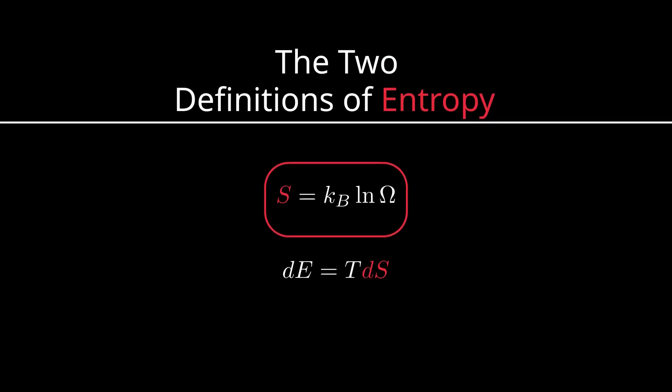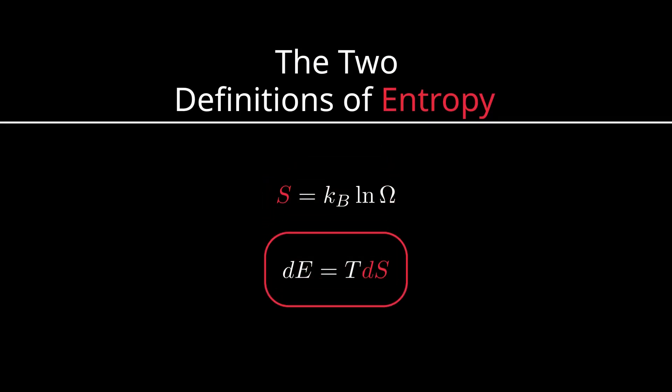Second, entropy measures how energy relates to temperature. Since one number describes both, you could figure out how temperature affects the system by counting the number of ways each state could exist within a system.